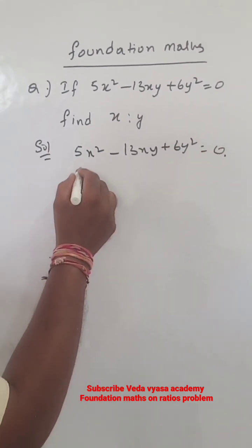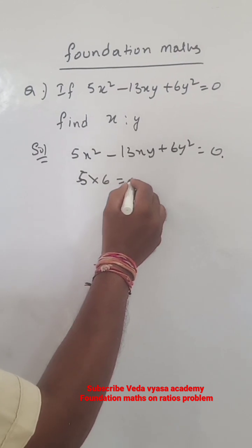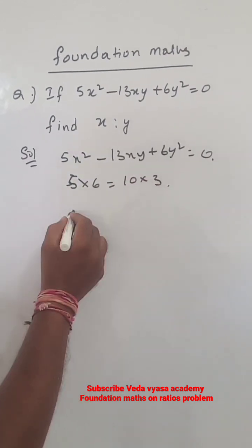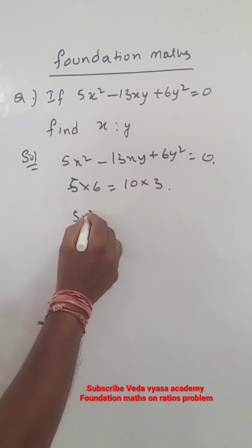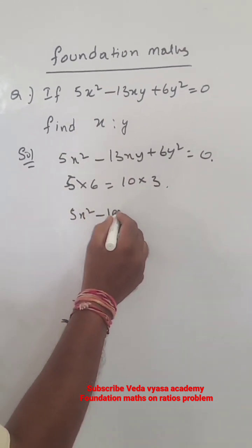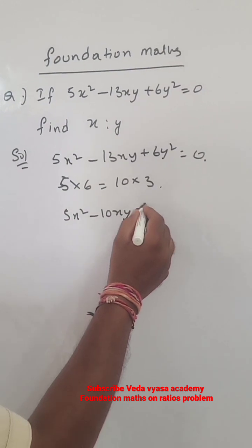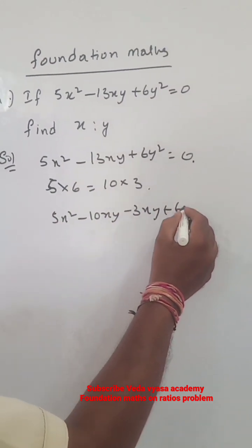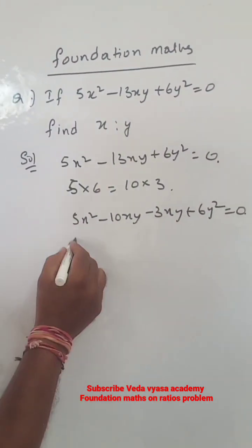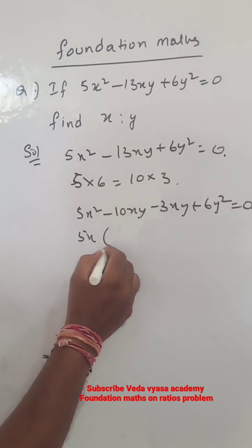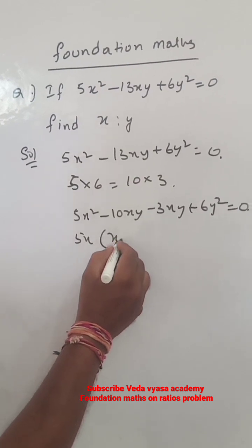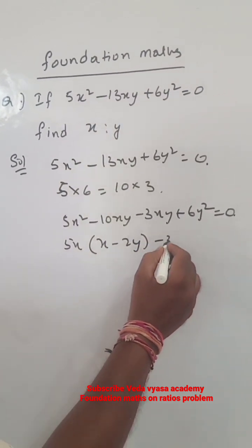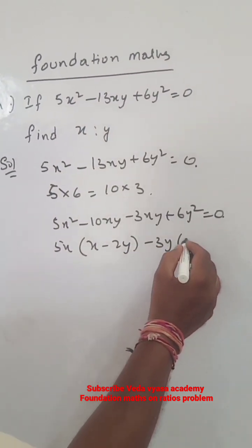So 5 into 6 is equal to 10 into 3. So 5x² minus 10xy minus 3xy plus 6y² is equal to 0. Then 5x as common, x minus 2y, minus 3y as common.